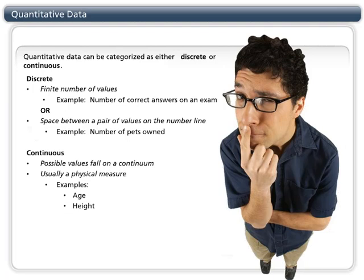One general way to tell if data is continuous is to ask yourself if it is possible for the data to take on values that are fractions or decimals. If your answer is yes, this is usually continuous data.